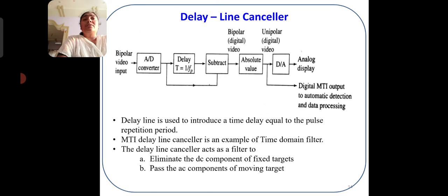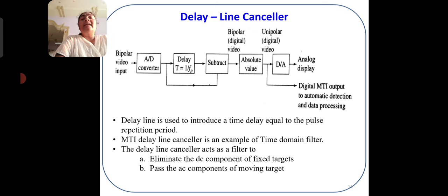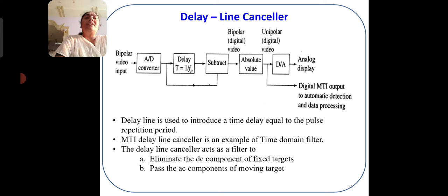Next, we will see the delay line canceller. The delay line canceller is constructed using an A-to-D converter, a delay component, a subtractor, an absolute value block, and a D-to-A converter. The main use of this delay line is to introduce a time delay equal to the pulse repetition interval (1/PRF), eliminating fixed target components and passing components of moving targets.